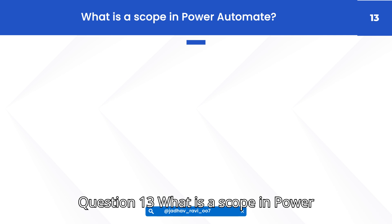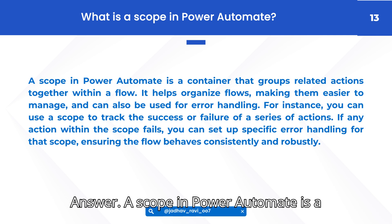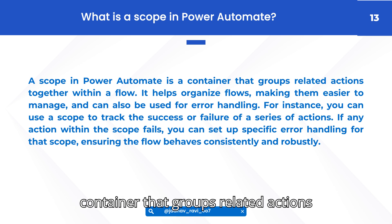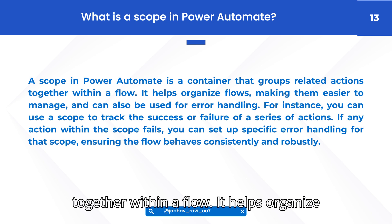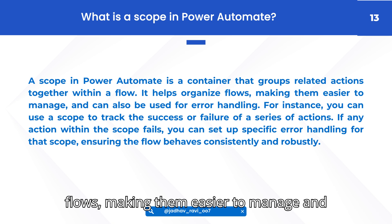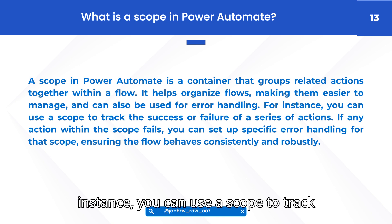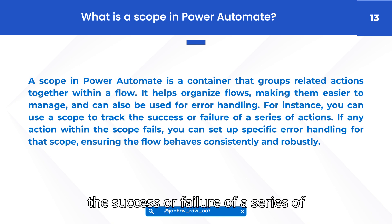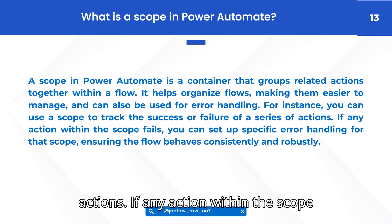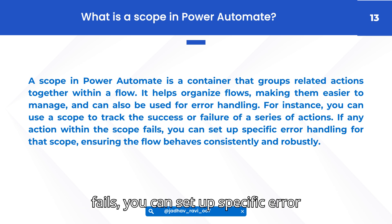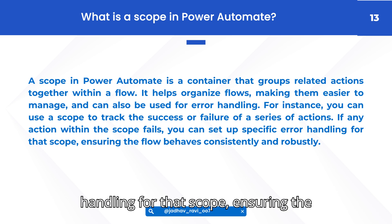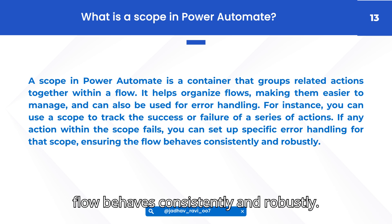Question 13: What is a scope in Power Automate? Answer: A scope in Power Automate is a container that groups related actions together within a flow. It helps organize flows, making them easier to manage, and can also be used for error handling. For instance, you can use a scope to track the success or failure of a series of actions. If any action within the scope fails, you can set up specific error handling for that scope, ensuring the flow behaves consistently and robustly.